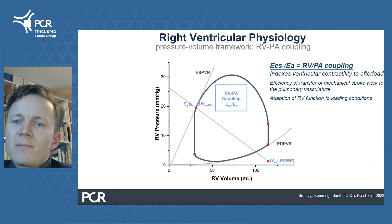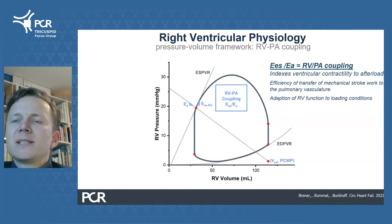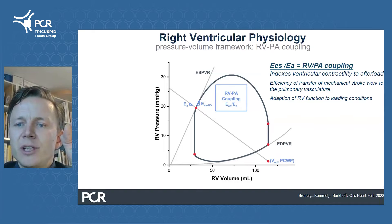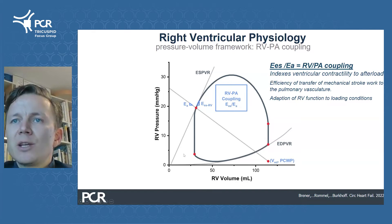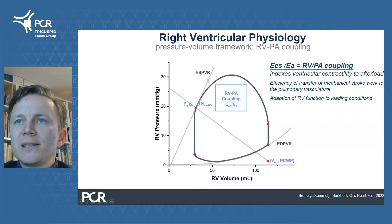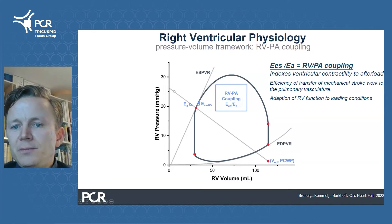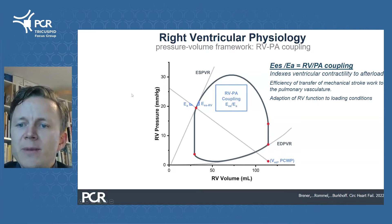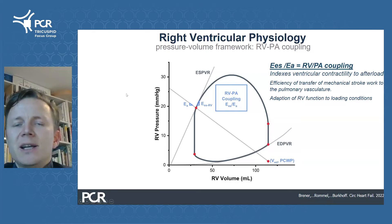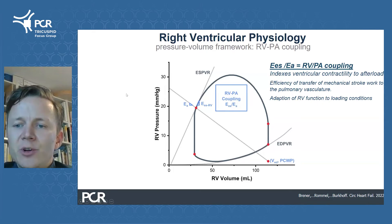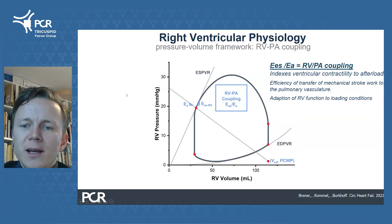Right ventricular-pulmonary arterial coupling is a concept indexing ventricular contractility to its afterload. On the PV loop, it can be summarized as the ratio of end-systolic elastance, resembling contractility, to the effective arterial elastance, resembling afterload. Conceptually, it describes a hemodynamic state where mechanical stroke work is most efficiently transferred to the pulmonary vasculature, and practically it helps you determine whether RV function is adequately compensated for specific loading conditions.